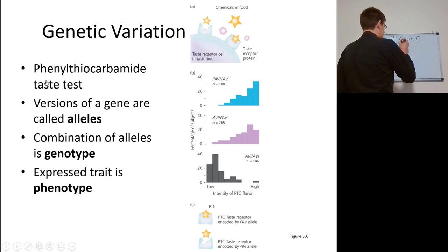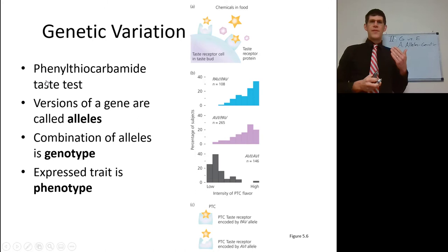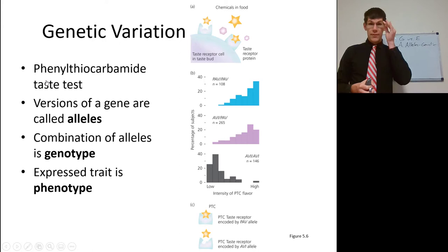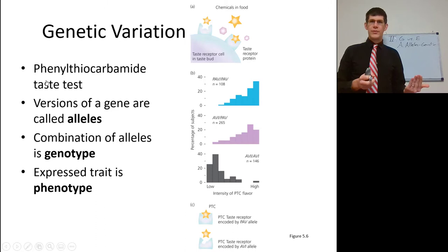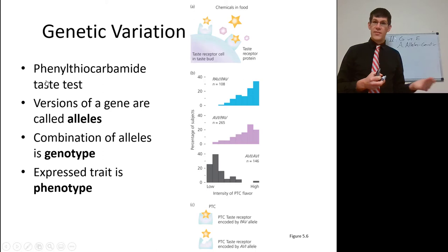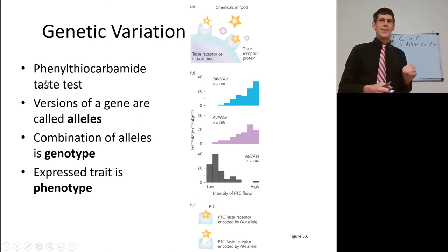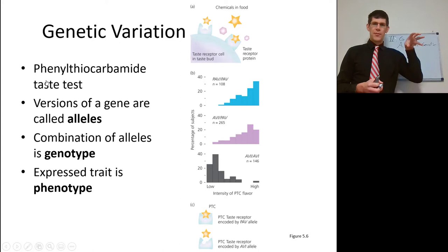Your genetic factors are your alleles. We have the phenylthiocarbamide (PTC) taste test. Some people can taste phenylthiocarbamide and some cannot. If you have both PAV alleles, you can taste it. An allele is a version of a gene. If you have one AVI allele and one PAV allele, you're heterozygous and can still taste it because PAV is dominant over AVI. If you have both AVI alleles, usually you can't taste it. The PTC taste receptor protein with the PAV allele can bind phenylthiocarbamide, but the AVI allele produces a mutated protein that cannot bind it.